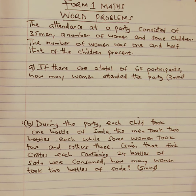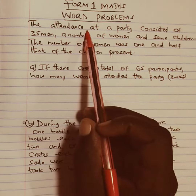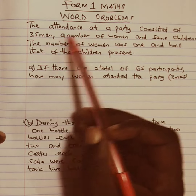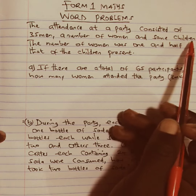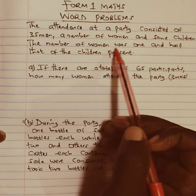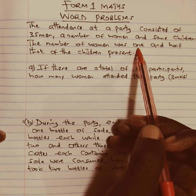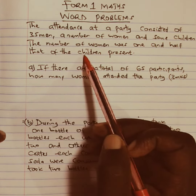Welcome to today's discussion. Today we are going to go through a question on word problems, Form 1 mathematics. The question reads: The attendance at a party consisted of 35 men, a number of women and some children. The number of women was one and a half times the number of children present.